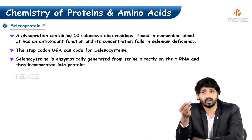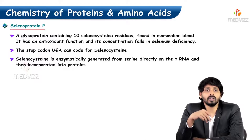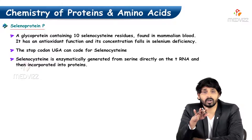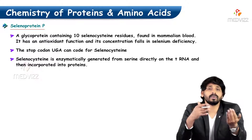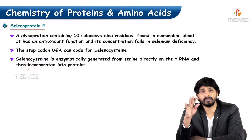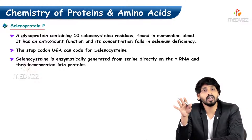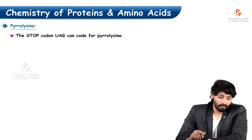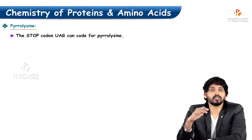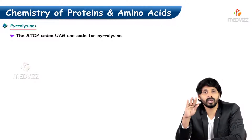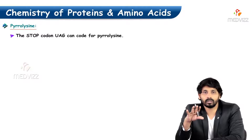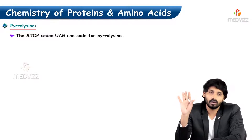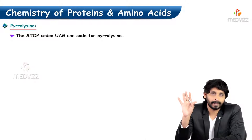The stop codon UGA can code for selenocysteine, but not in humans. In some primates and some microbial flora this may be possible, not in humans. Similarly, pyrrolysine can be coded by the stop codon UAG, but again not in humans — it has nothing to do with protein synthesis in humans, only in microbial flora.